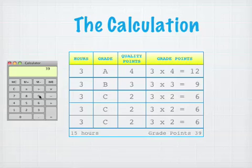Thirty-nine grade points divided by fifteen hours equals two point six. Our grade point average for this schedule is two point six.